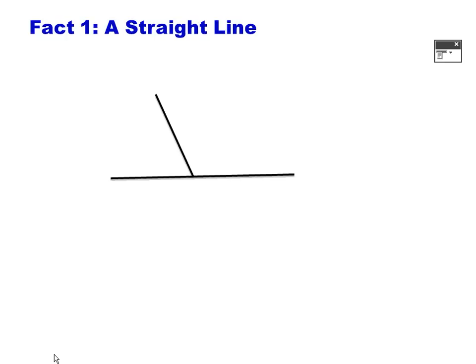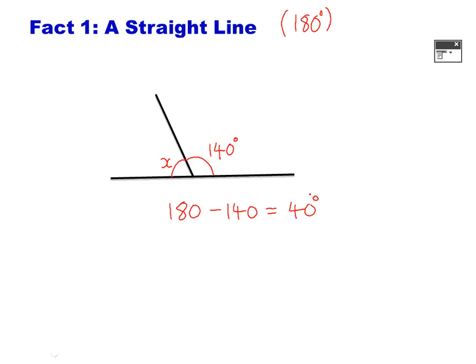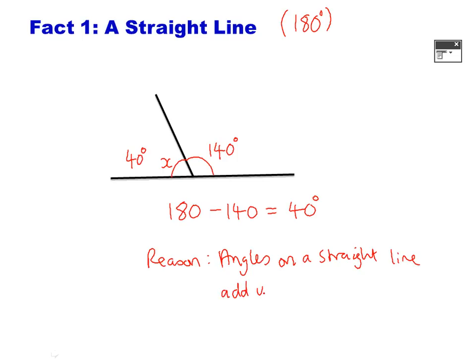Fact number one: a straight line. What we need to know is that angles on a straight line add up to 180 degrees. So if we're looking for angle x, and we're given the other angle as 140 degrees, we do 180 take away 140, which leaves us with 40 degrees. So angle x is 40 degrees, and the reason — you often get a mark for writing your reason — is: angles on a straight line add up to 180 degrees.